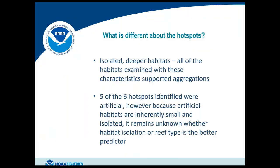All six hotspots are isolated, deeper habitats — small patches of natural or artificial reef surrounded by large expanses of sandy, unconsolidated, unstructured habitat. Five of the six were artificial reefs, but because artificial habitats are inherently small and isolated, we don't know whether habitat isolation or reef type is the better predictor. This outcome introduced many new research questions: how do small structures support such large fish biomass, what attracts groupers to these areas, and how do these aggregations relate to larger-scale population dynamics?